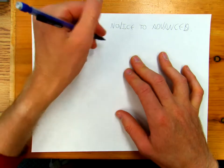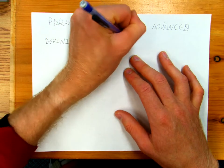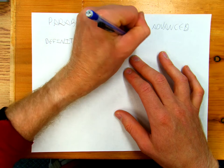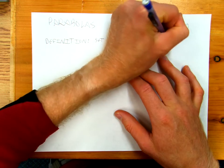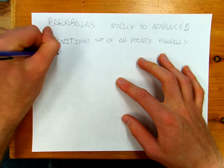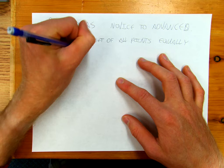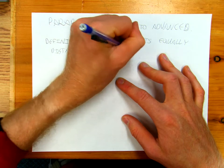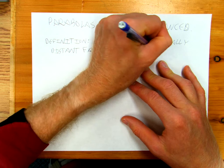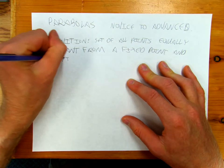So the definition of a parabola is the set of all points equally distant from a fixed point and a fixed line.